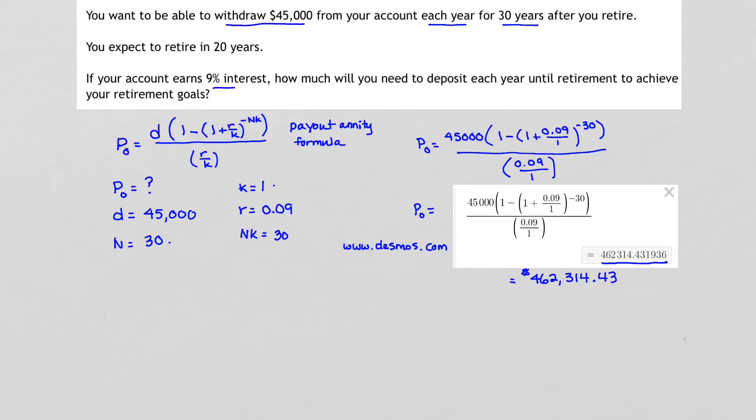So that is the amount of money from which I am making my withdrawals. In other words, that's the amount of money that I need in my account if I want to withdraw $45,000 each year for 30 years. The problem overall is asking us, how much money will we need to deposit each year until retirement to achieve our retirement goals?